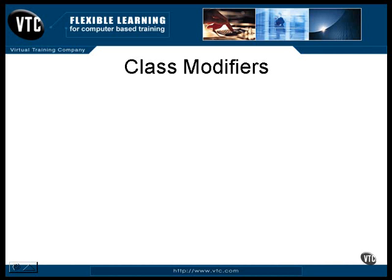When you declare a class, you use the keyword class and give it a name. A simple class declaration looks like this. But there are some modifiers that you can specify that further refine the definition and some characteristics of the class. They can be used individually and they can be used in combinations as long as they don't conflict.